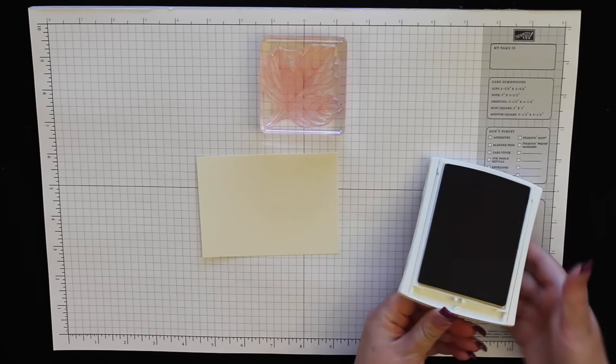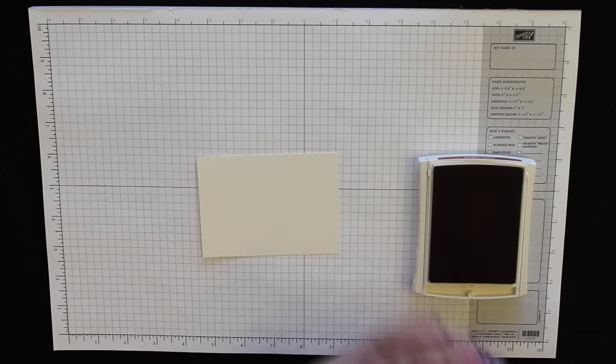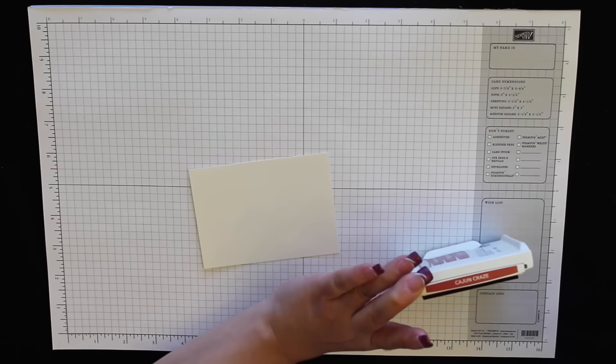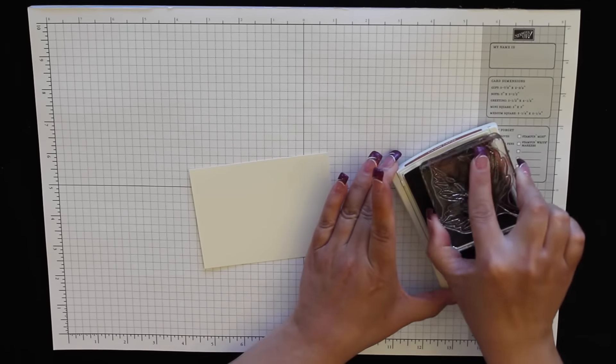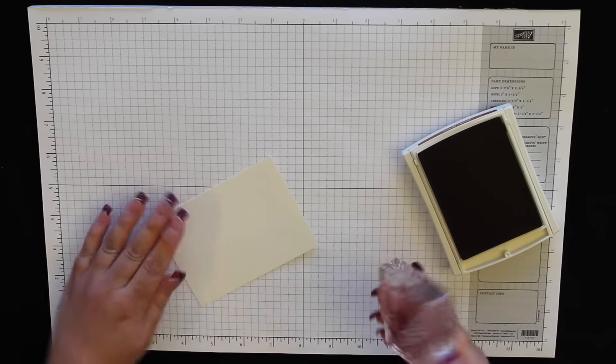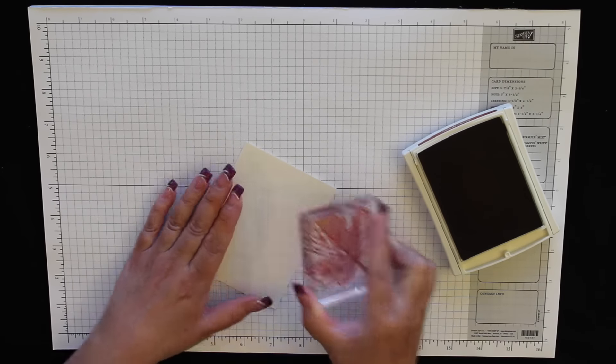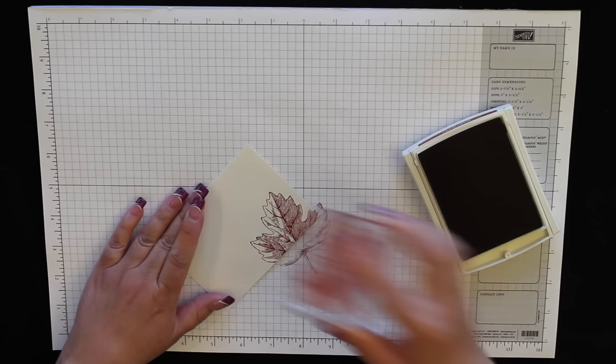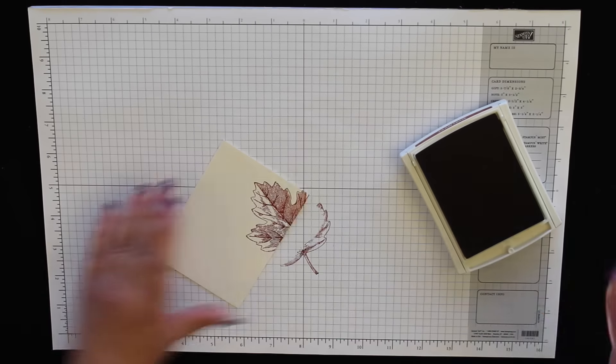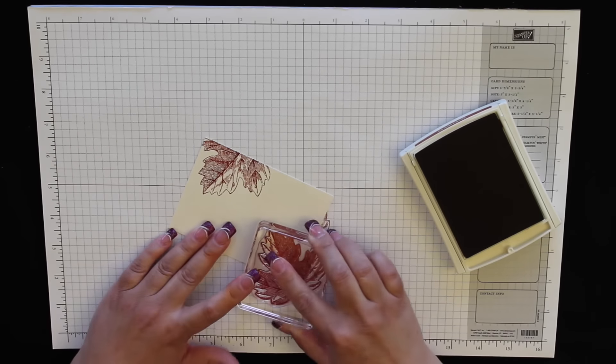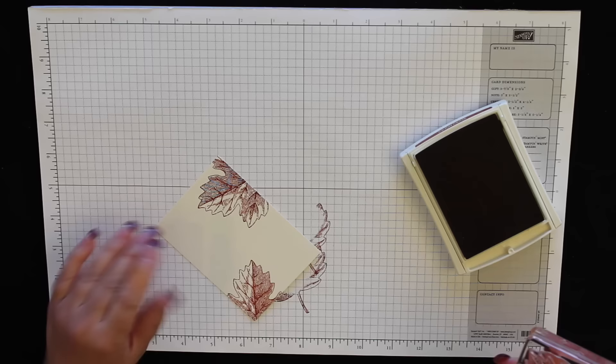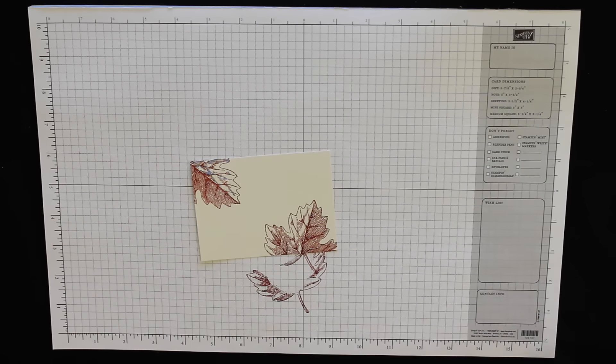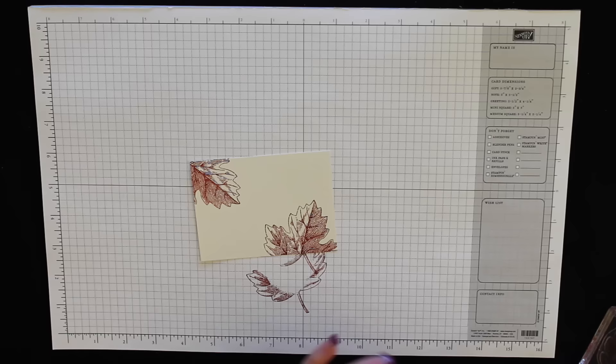Okay, so go ahead and ink this up. Like I said, this is the Cajun Craze ink, and I want these going off the edges of the paper in all kinds of directions. Just kind of fill it up, put one here, put another one up in this corner. Because this is a smaller piece of cardstock, I only have room for about two images, two of each of the leaf images. So let's close this one out.